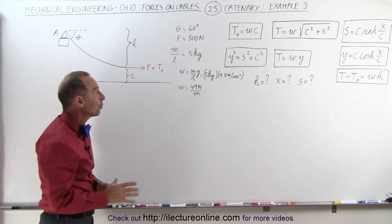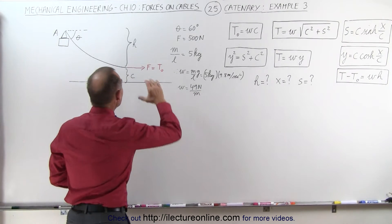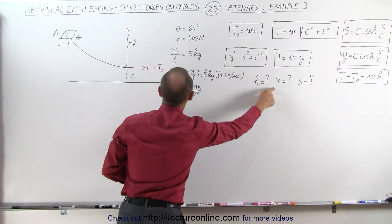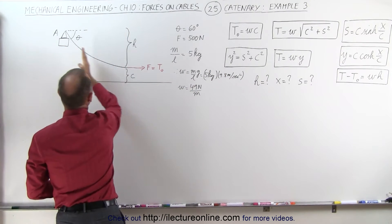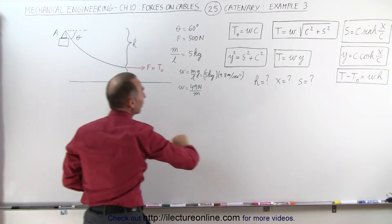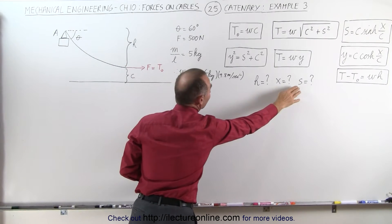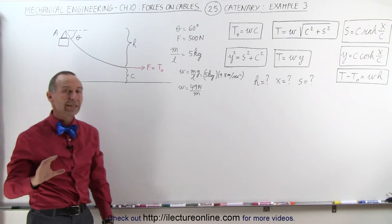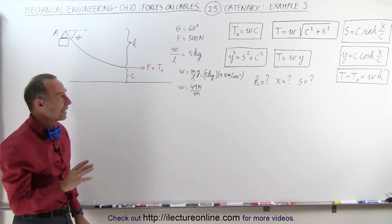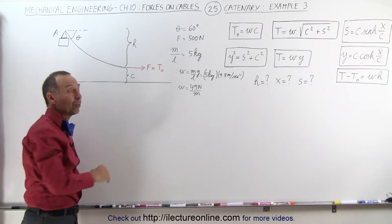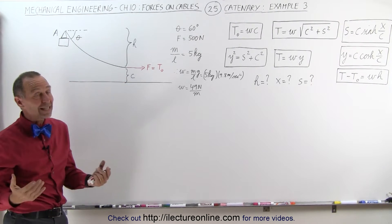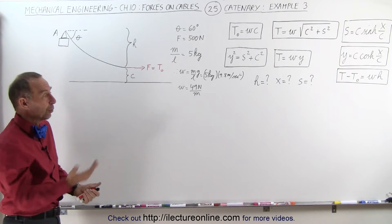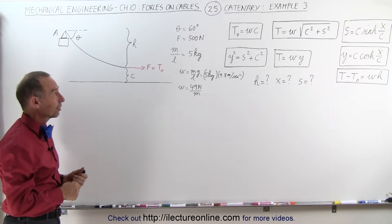What we're trying to find is h, the amount of sag; x, the distance the cable is pulled to the right from the attach point; and the length of the cable. They don't specifically ask for c, but without finding c you're not going to find some of these other answers, so we also need to find c.